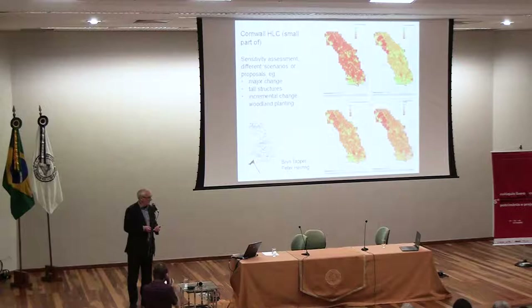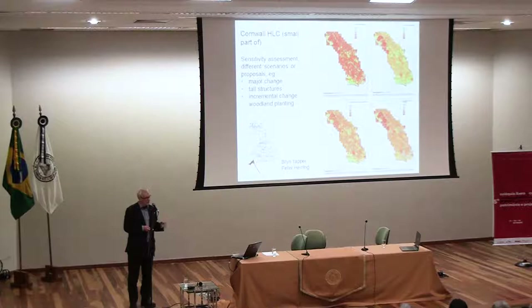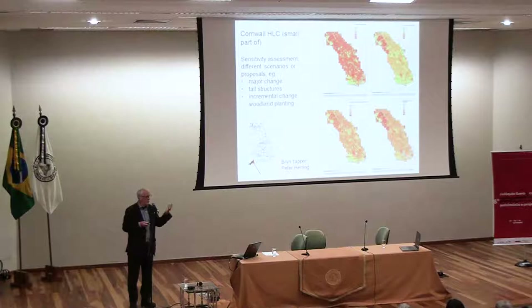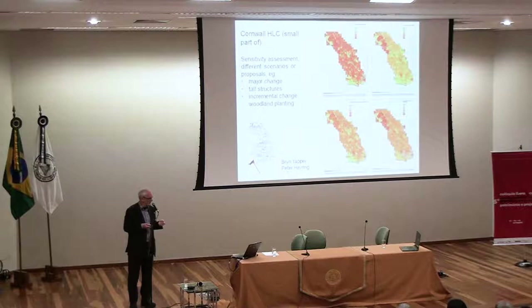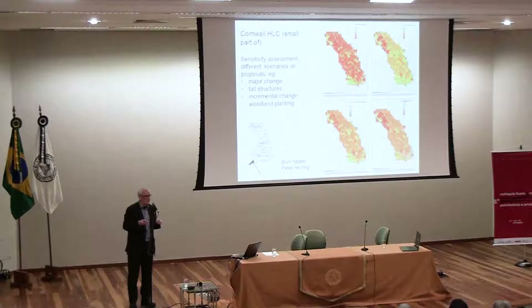This is one of several examples of people using HLC to say whether or not a piece of land is highly sensitive or not very sensitive to change. Each of these maps shows a different sort of change — major change in the sense of large-scale building work, tall structures, wind turbines; slow change with little things changing all the time; and deliberate woodland planting. The sensitivity of landscape to these four different things changes. It's not simply enough to say this is an important historic landscape — you need to ask: sensitive to what?